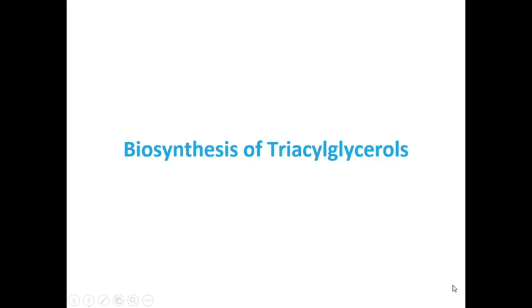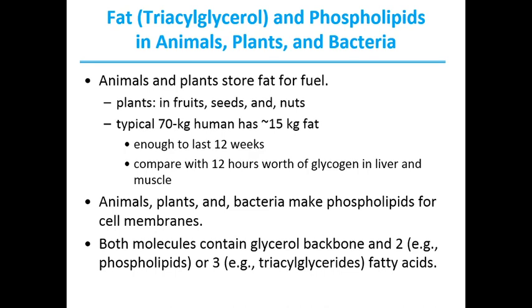In the next section, we will learn about the biosynthesis and regulation of triacylglycerols. Animals can synthesize and store large quantities of triacylglycerols to be used later as fuel. Plants also manufacture triacylglycerols as an energy-rich fuel stored mainly in fruits, seeds, and nuts. The total amount of stored triacylglycerol in a 70 kg human being is about 15 kg — enough to last for 12 weeks. In contrast, humans can only store a few hundred grams of glycogen in liver and muscle, barely enough to supply energy needs for 12 hours. This means that triacylglycerols have the highest energy content of all stored nutrients.